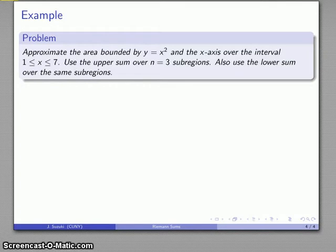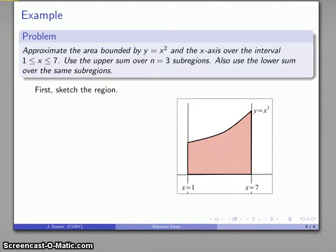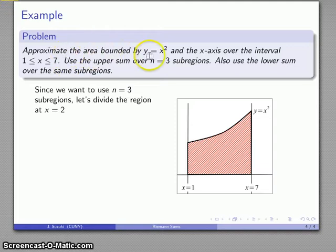Let's approximate the area bounded by y equals x squared and the x-axis over the interval one to seven. We'll use the upper sum with n equals three sub-regions, and we'll also find the lower sum over the same sub-regions. Let's sketch what that region looks like: y equals x squared, above the x-axis, from x equals one to x equals seven. We have a bounded region, so I can ask the question: what is the area? I want to use the upper sum with n equals three sub-regions.